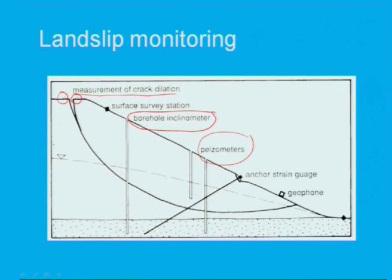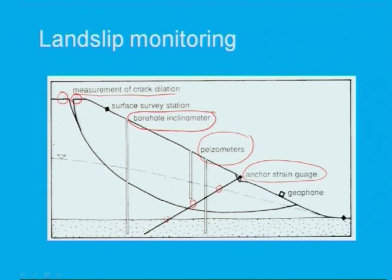Anchor strain gauges have been placed along the slope. With these anchor strain gauges you can find out how much strain — meaning what is the displacement of the slope.